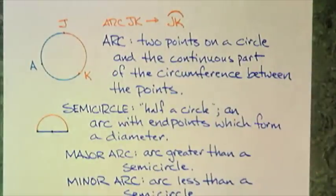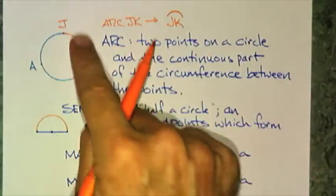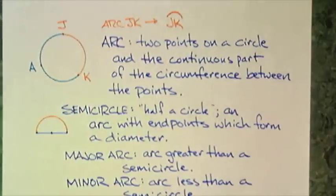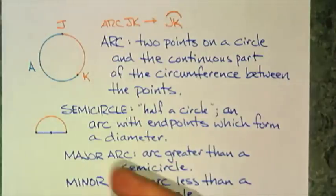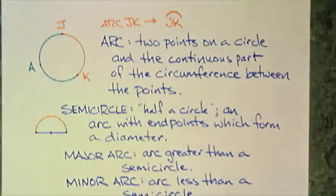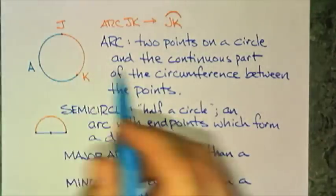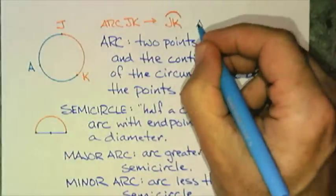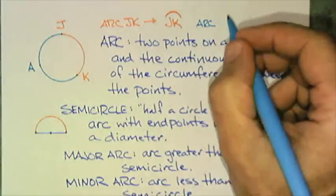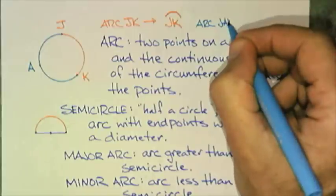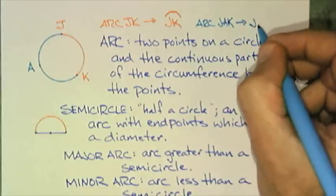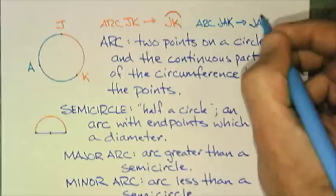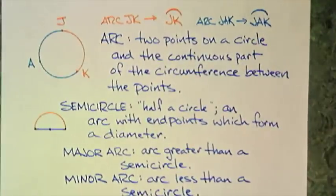Now, and you may wonder, am I talking about the orange part or am I talking about the blue part? I'm always talking about the shortest arc, not going around the long way. If I want to go around the long way, if I want the blue part, I have to use three points. And that would be arc JAK. And I would mark that as such, start at J, go through A and end at K, a little bit larger.